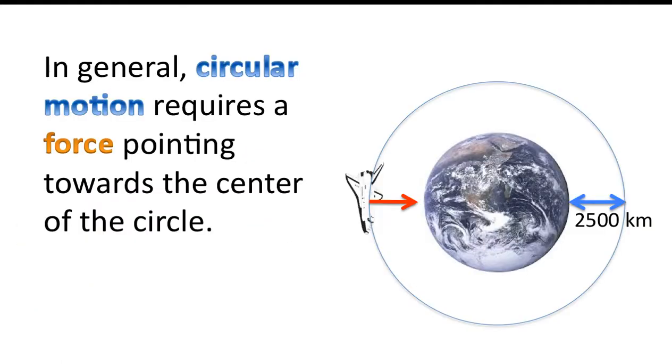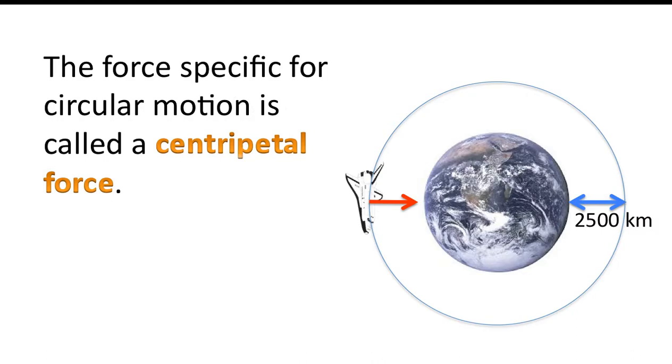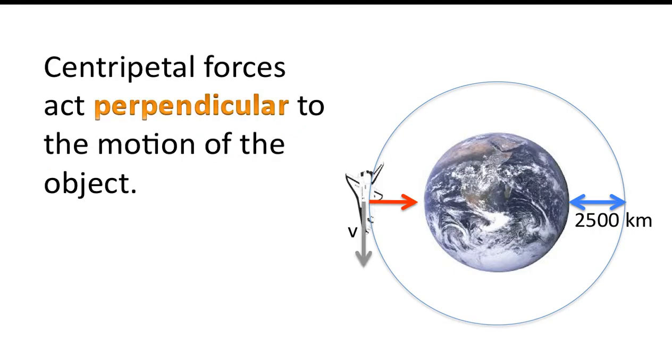So in general, circular motion requires a force pointing towards the center of the circle. For circular motion, this force is called a centripetal force. Centripetal forces always act perpendicular to the motion of the object. So notice the velocity is drawn, and notice the force acts at a right angle to that.